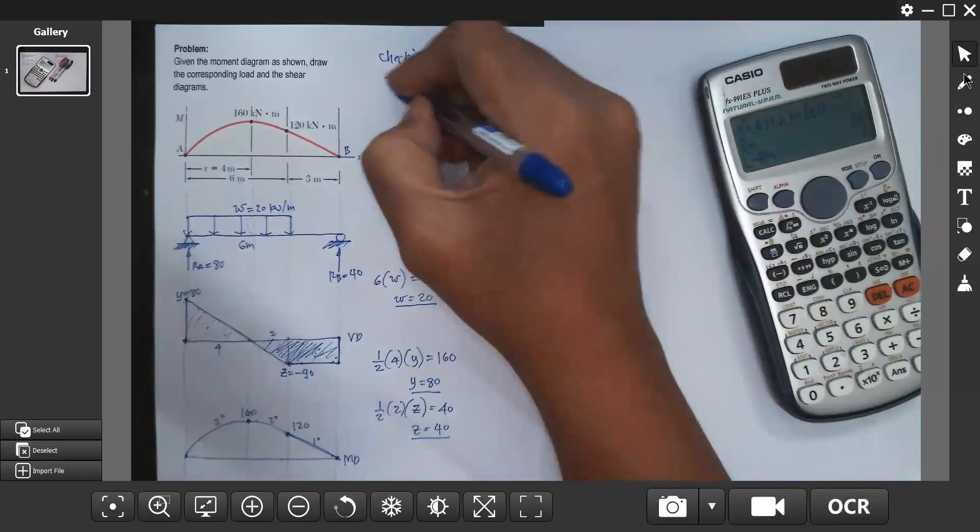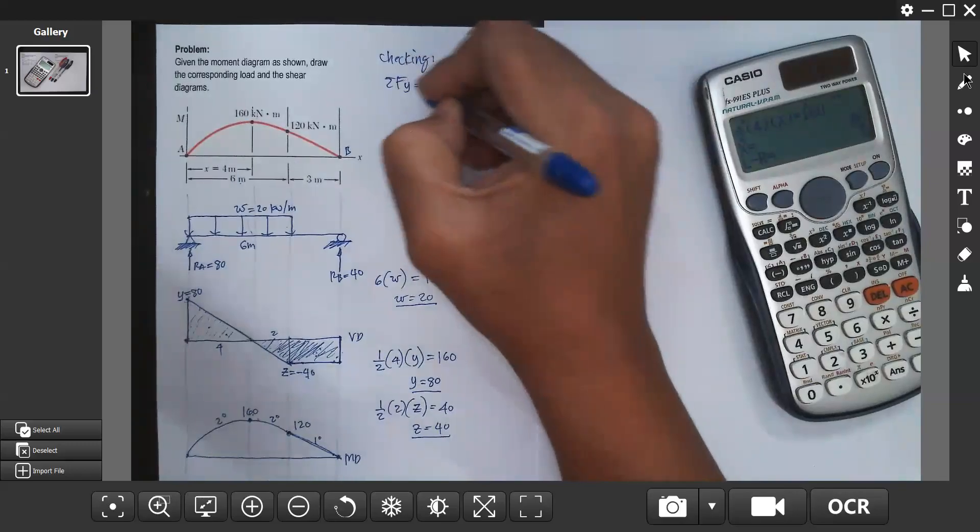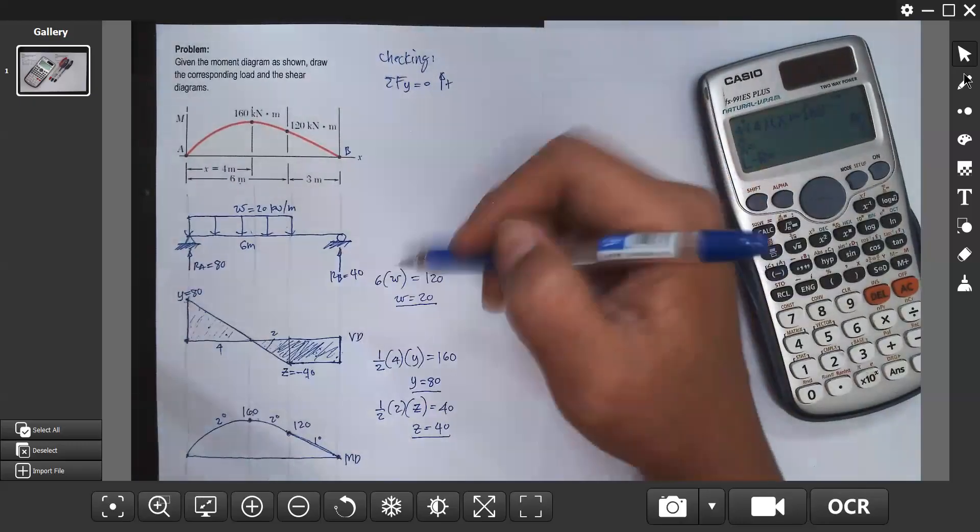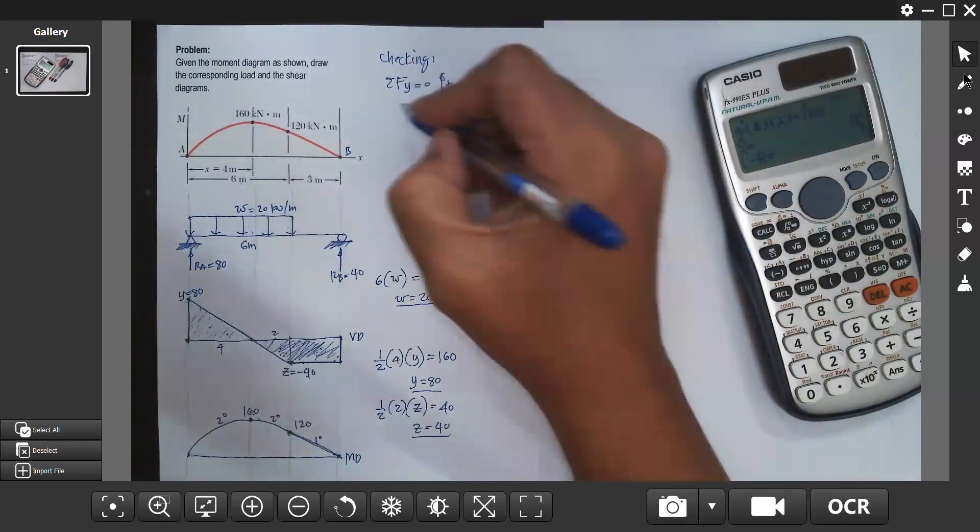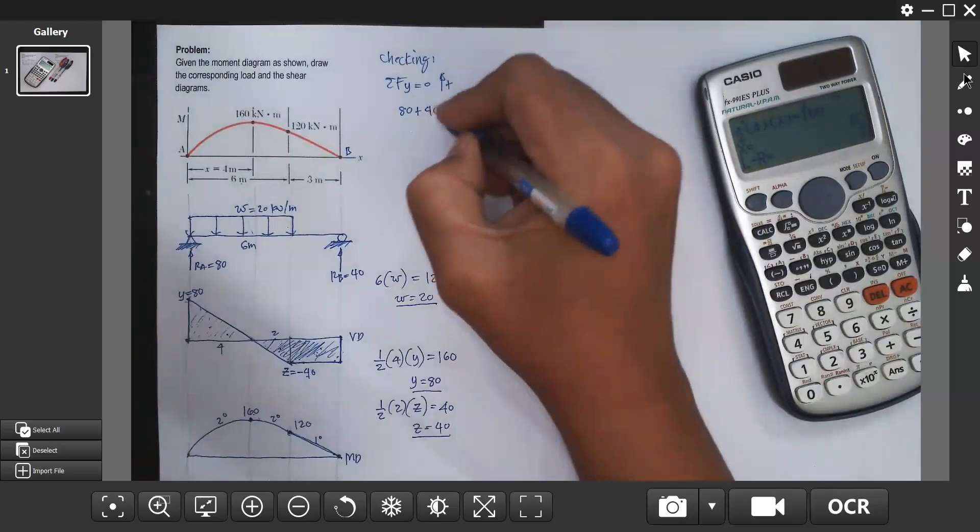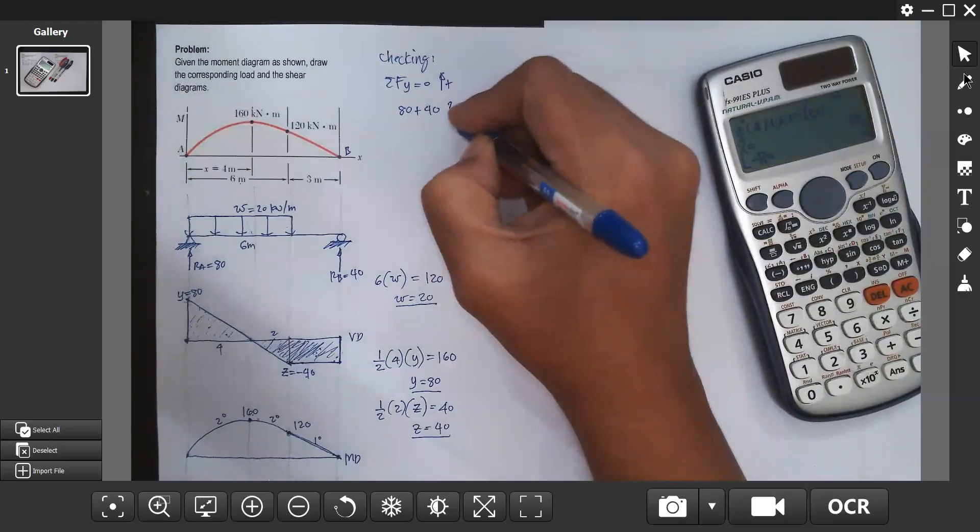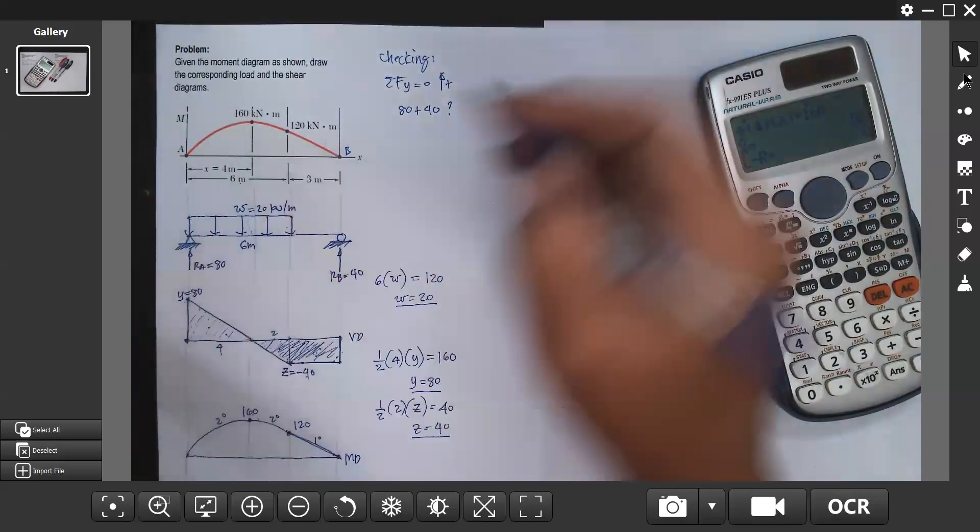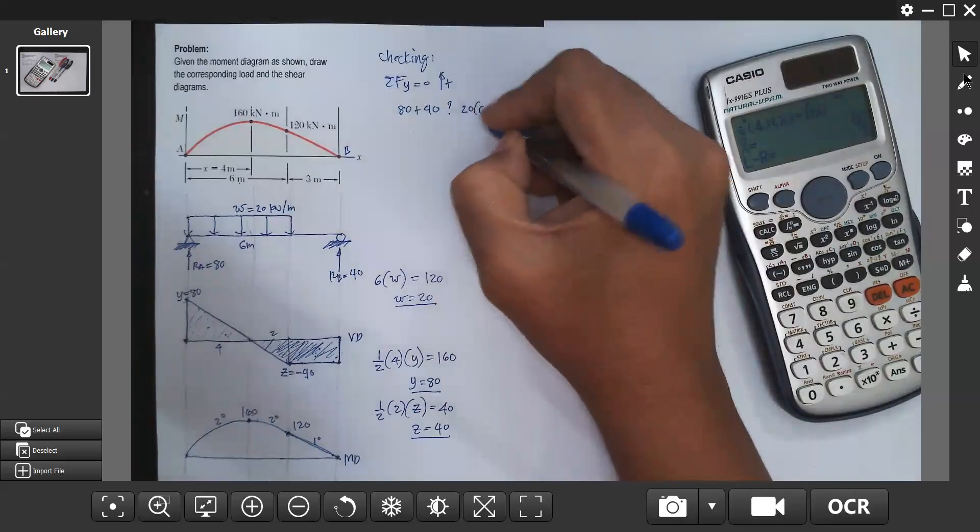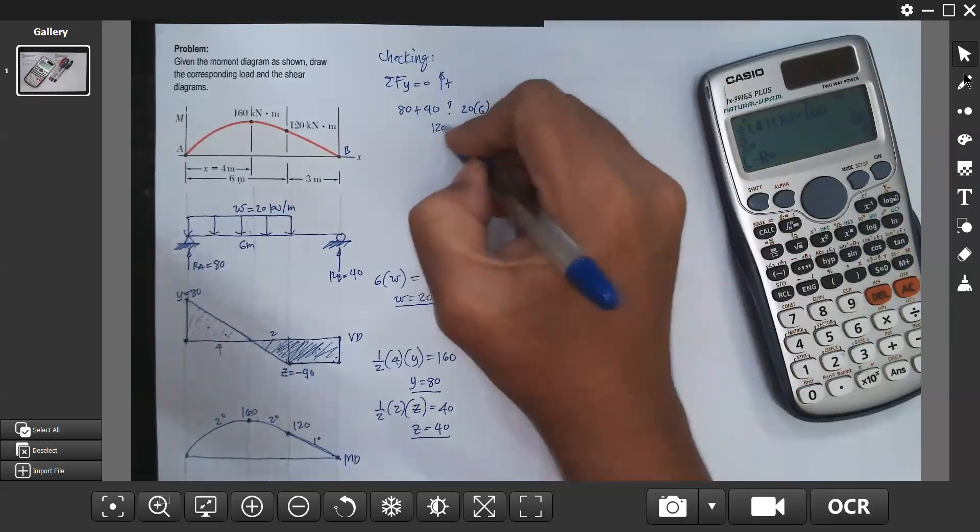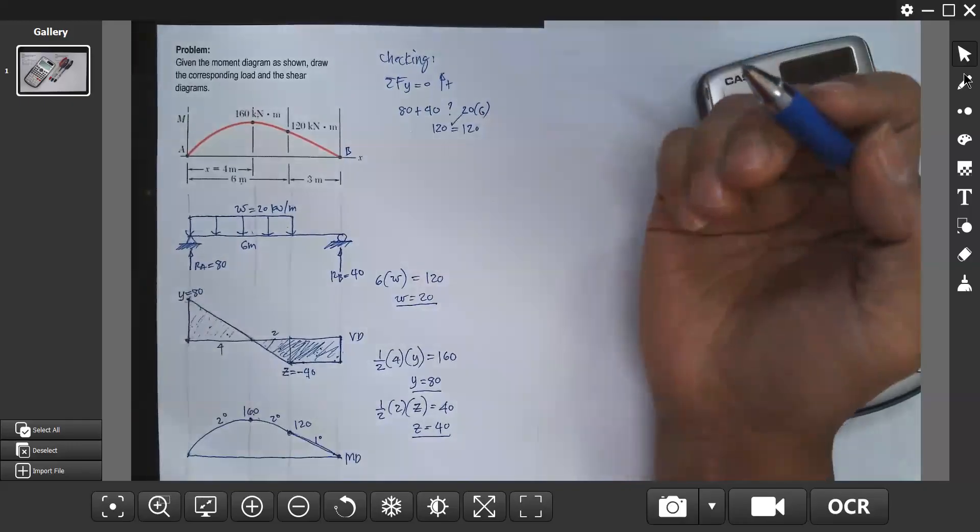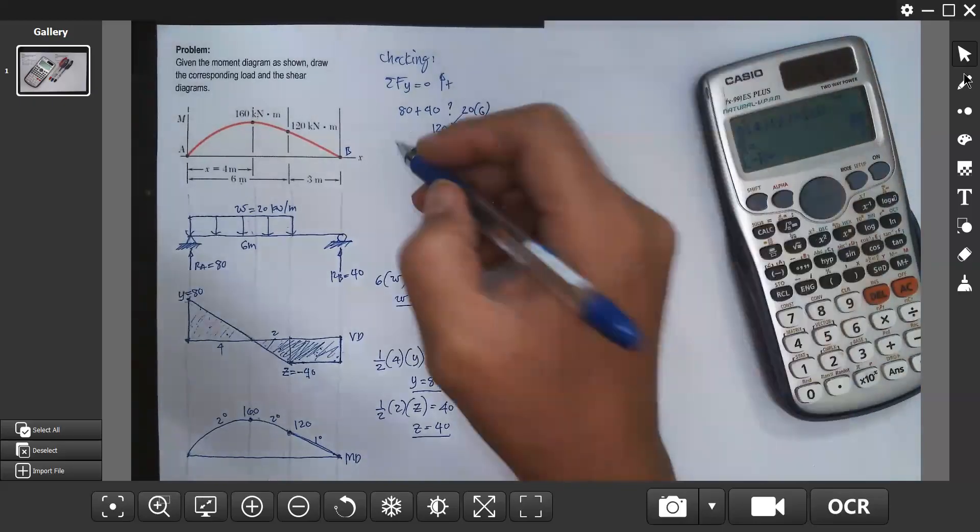Let's check. Summation of force in vertical direction. Check if the upward force is equal to the downward force. The upward is 80 plus 40. Is it equal to the uniform load? The resultant is 20 times 6. So 120 equals 120. It checks.